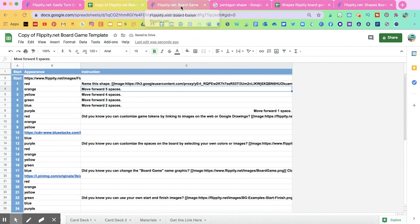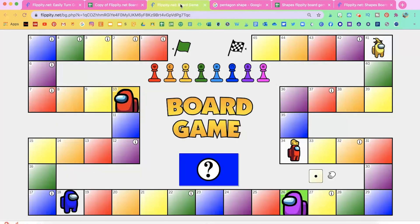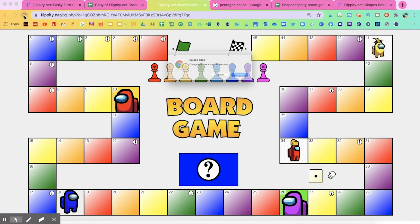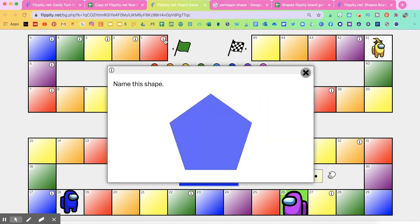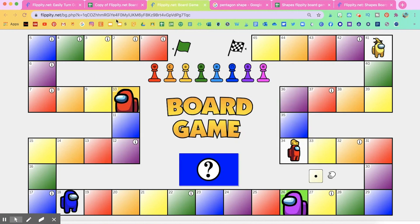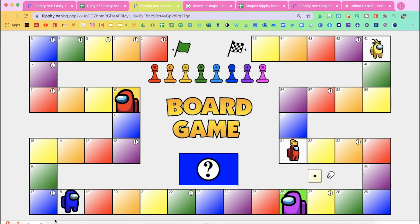Okay. So I'm going to see that was square number one. So I'm going to go back to my board game. I'm going to click on number one. And there it is. It says name this shape and it has the picture that I selected.